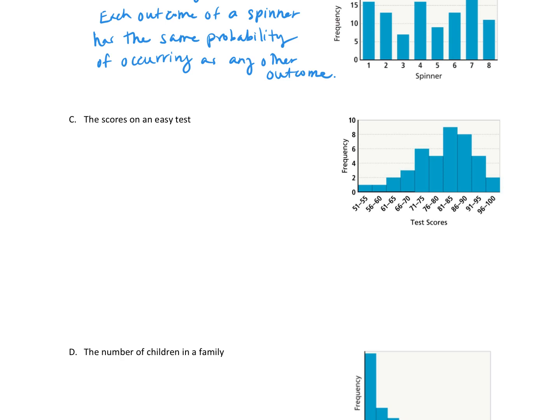So we would say that it's not normally distributed. And the reason for this is, if you have an easy test, more students are likely to score higher. So here are our higher test scores. As we can see, more students are scoring higher when it's an easy test. So more students are likely to score higher. So that one is not normally distributed.